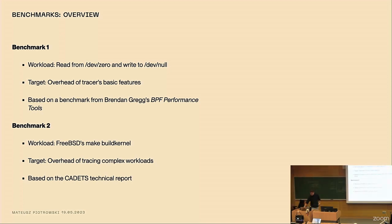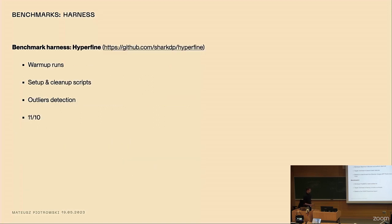So benchmarks. Let's talk about benchmarks. I have two benchmarks today for you. The first one is a micro benchmark where we read from /dev/zero and write to /dev/null. The goal here is to see what's the overhead of basic features of a tracer. It's based on the benchmark from Brendan Gregg's BPF performance tools book. It's a very nice book. But the nicest part about it is that it's a published result that I can refer to and then we can compare if what I created actually makes sense. From benchmark number two, the workload is building the FreeBSD kernel. This is the second published result about tracers overhead I could find. As making the kernel is quite a complex workload, we are tracing a lot of different parts of the operating system. That's a kind of a macro benchmark. And it's based on the CADETS technical report where the benchmark was published.